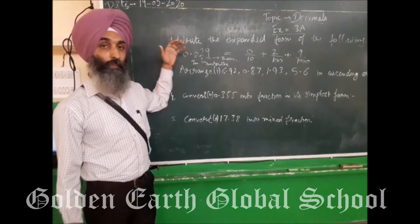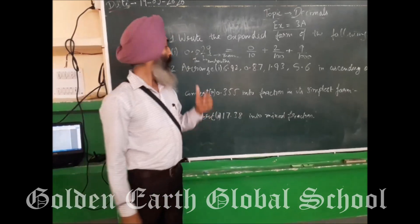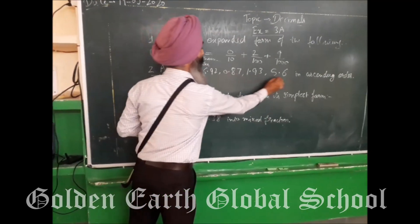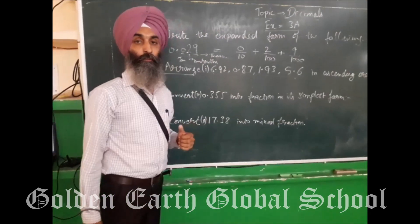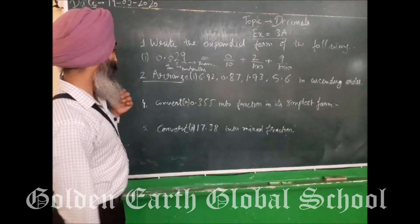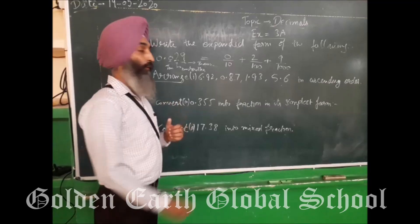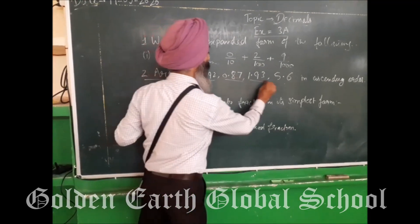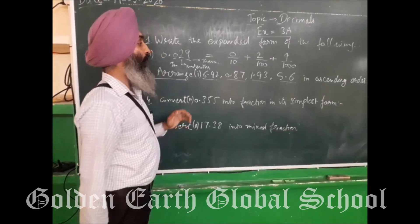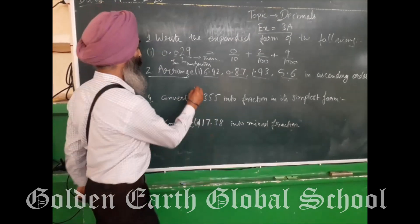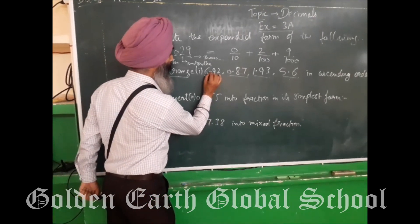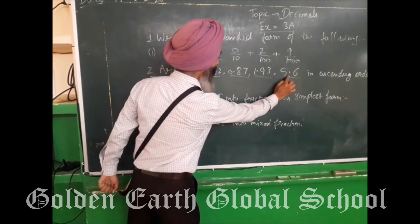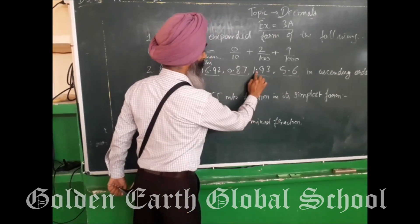The rest of the parts you will do yourself. The next question is: arrange these decimals into ascending order. First of all, you have to arrange these decimal numbers as like decimals. See that maximum — after decimal — how many digits are there? These are two, these are two, these are two.